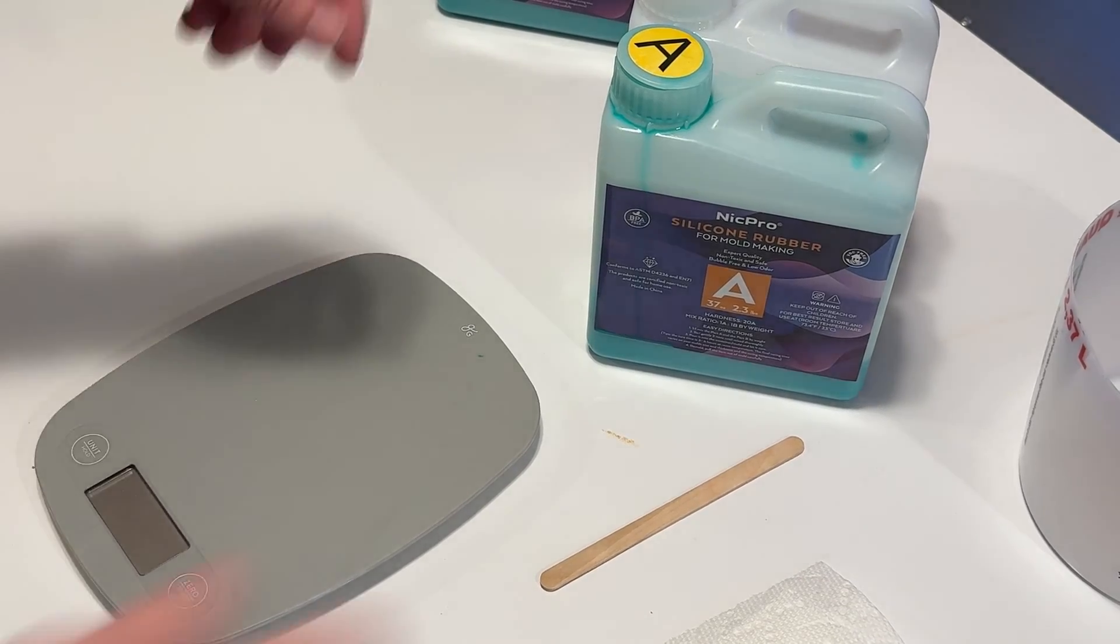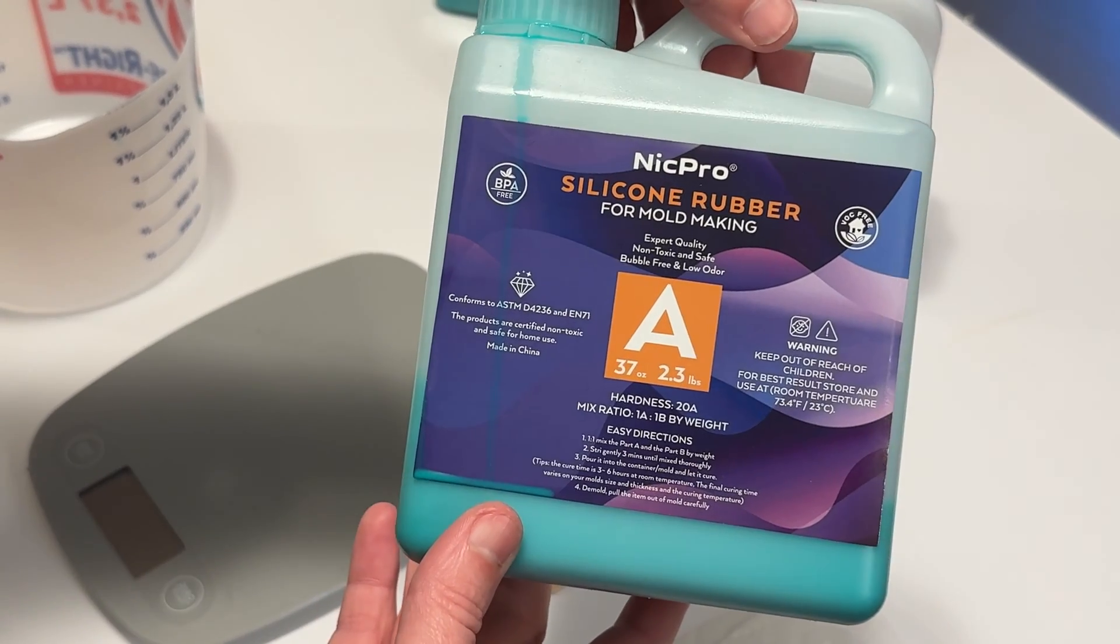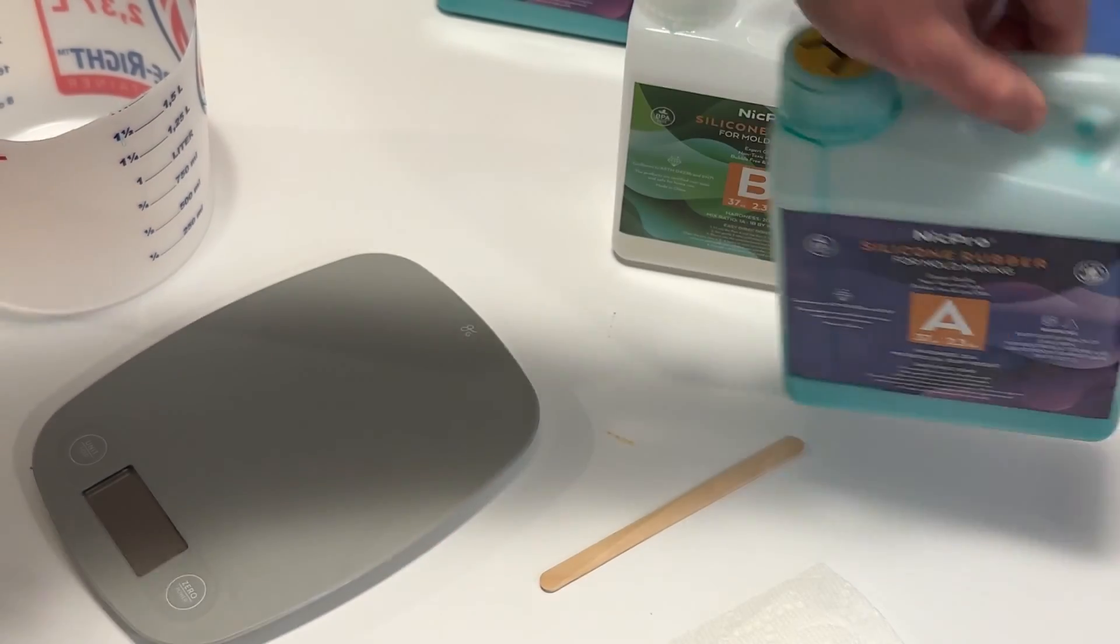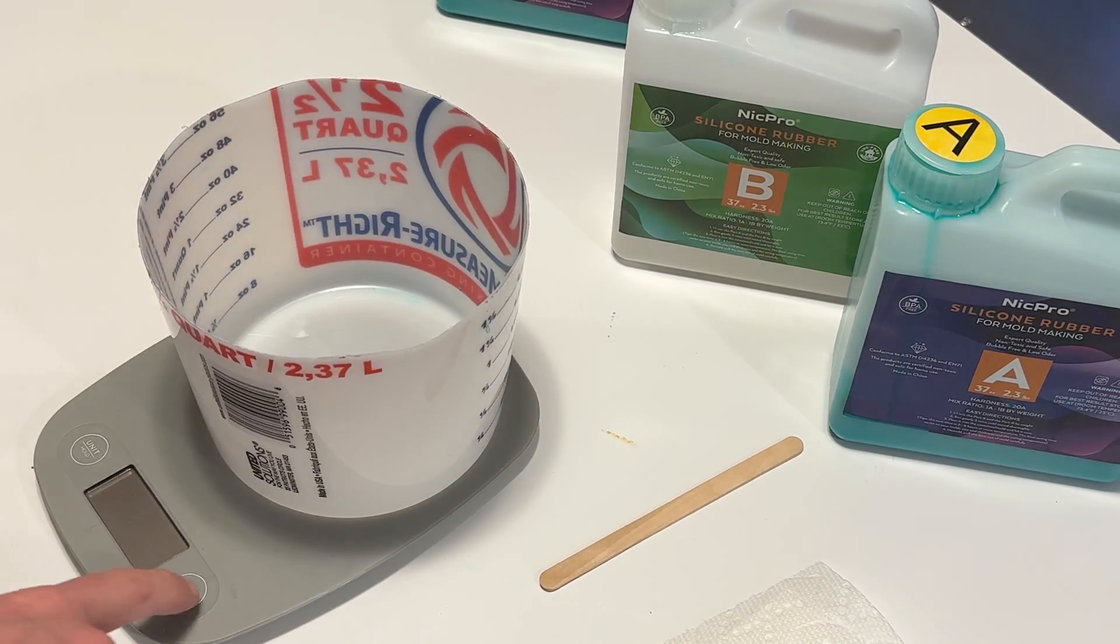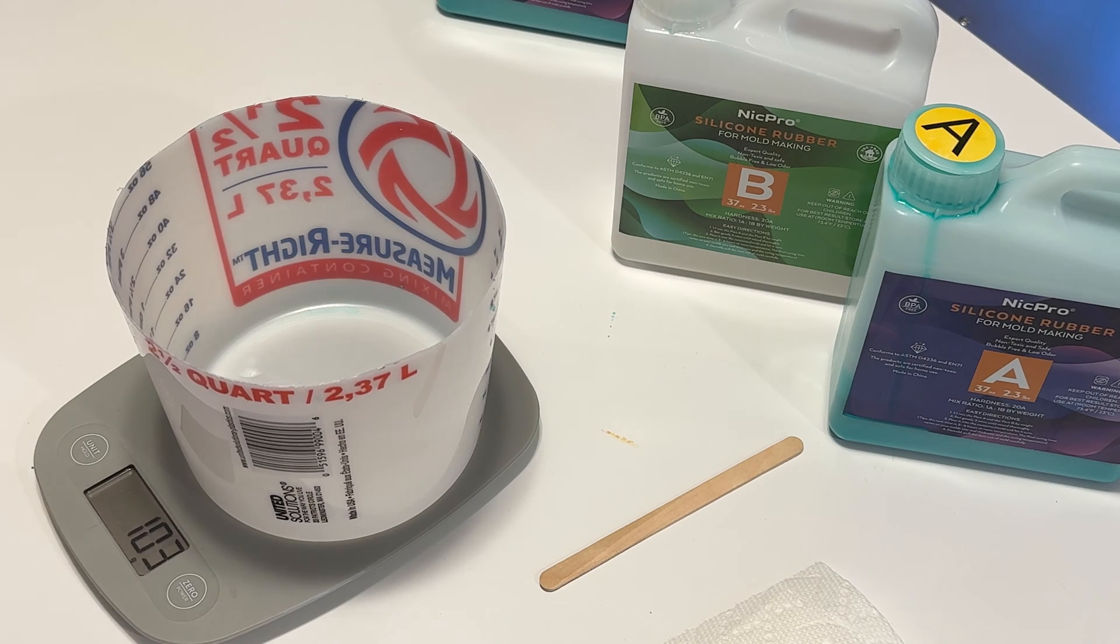And now it's time to pour the silicone. I'm not going to make you watch a long video on that, but I do use this NIC Pro, the cheapest stuff I could find on Amazon. It is the Platinum Cure, so it's safe for food, which I do make some other candy things and whatnot. But very easy to work with.